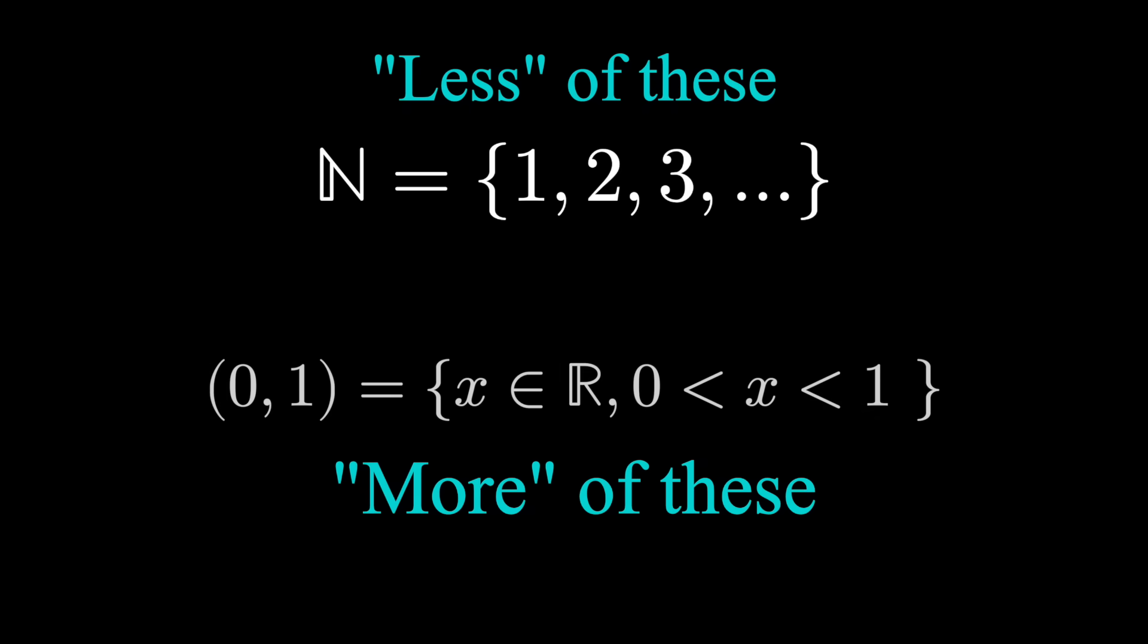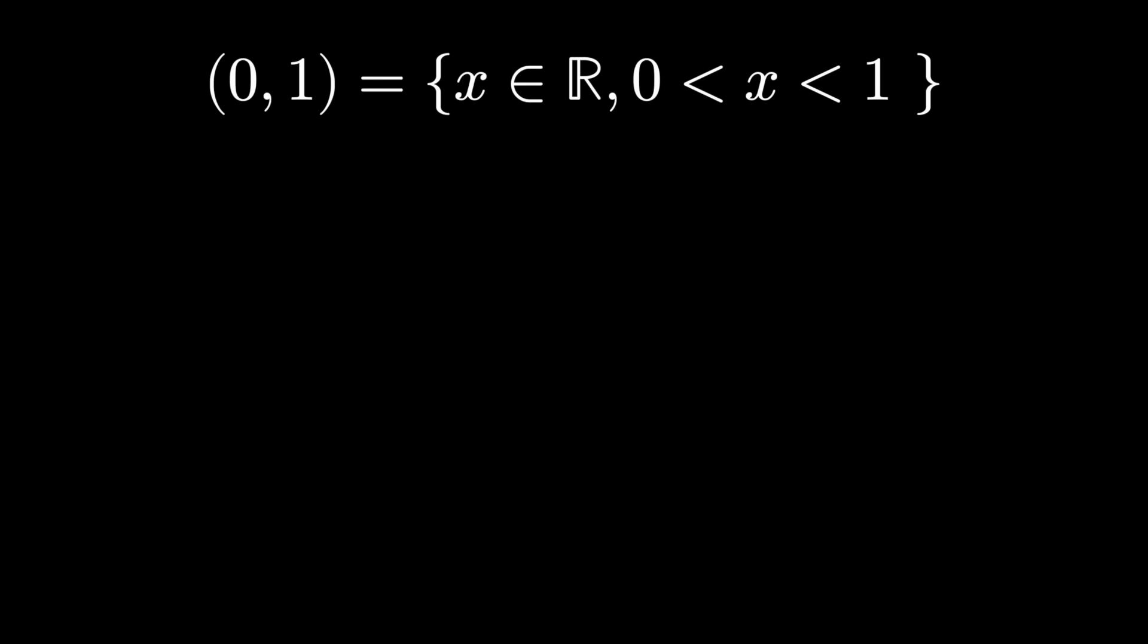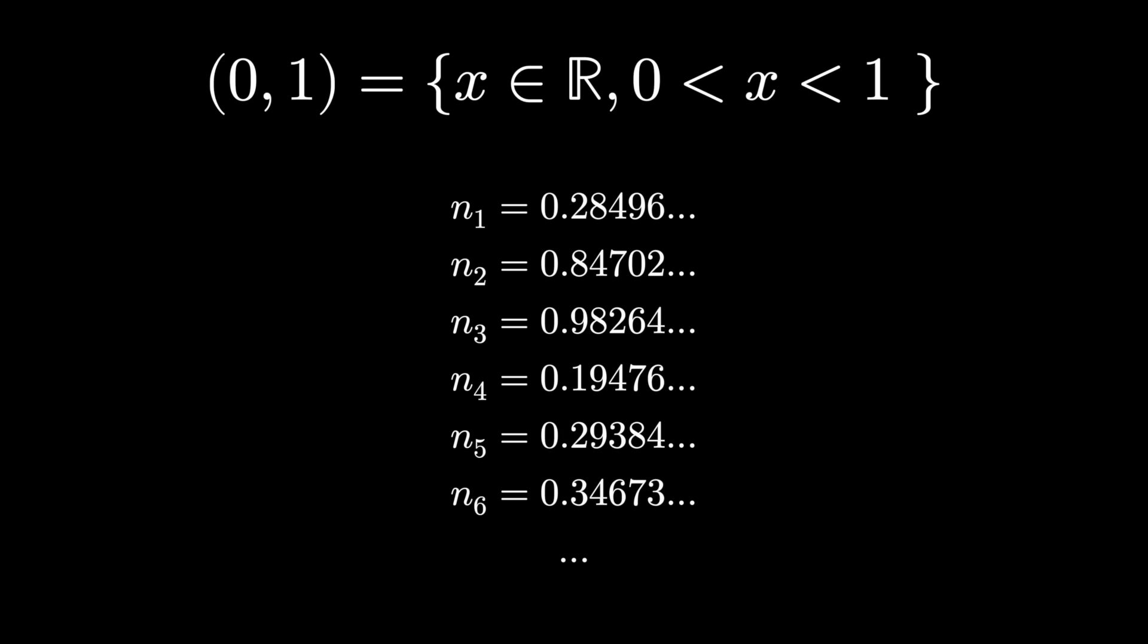You can list all of the natural numbers starting at 1 out to infinity in order. Here's our list. Do you think we can do that with all the numbers between 0 and 1? Let's try. Here's my list. I'm assuming that it exists. This is all the numbers in between 0 and 1 in some order.